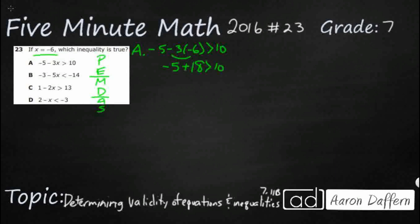So we get negative 5 plus 18. You could use the commutative property if you wanted to. You could flip the order. You could say 18 minus 5 is greater than 10. So 13 is greater than 10. So that looks like that works.